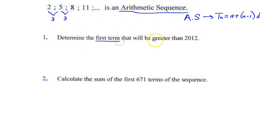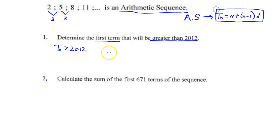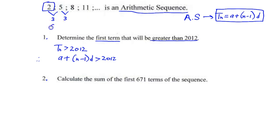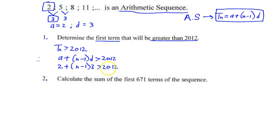We need to determine the first term that will be greater than 2012, therefore tₙ must be greater than 2012. Using the formula: a + (n − 1) × d > 2012. Substituting our information: the first term a is equal to 2 and d is equal to 3, giving us 2 + (n − 1) × 3 > 2012.